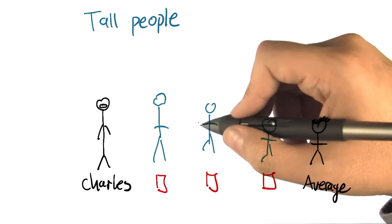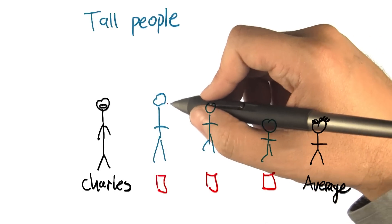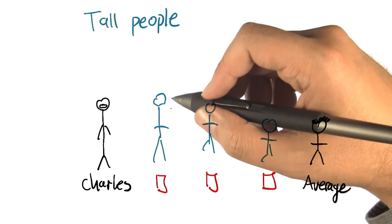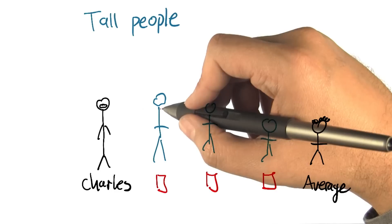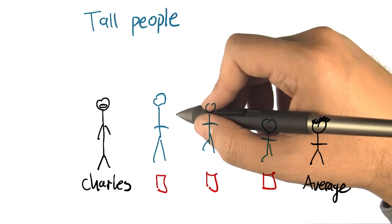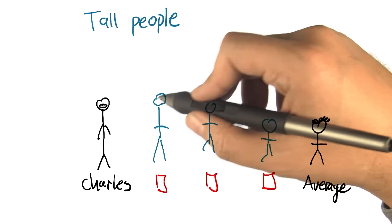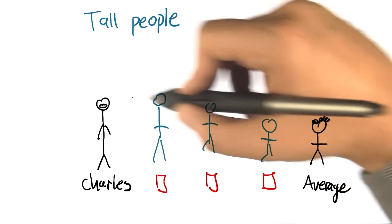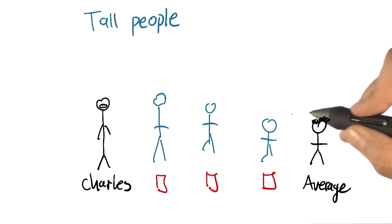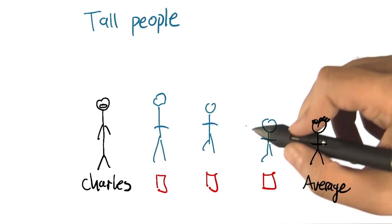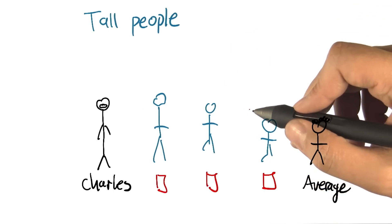So now let's pretend, Charles, that you have children. I do have children. All right, so we can just pretend. And we want to ask the question, what would you expect the average height of your children to be? Would you expect it to be sort of Charles height? Or average height? Or maybe somewhere in between? So let's actually ask this as a quiz.